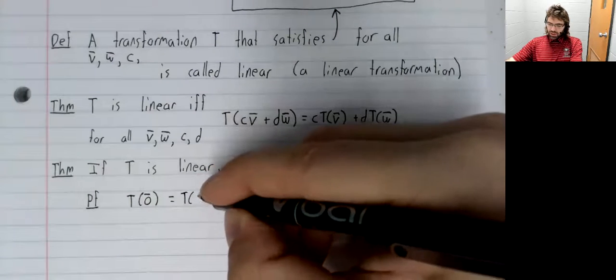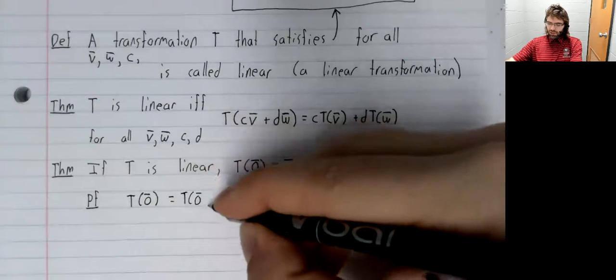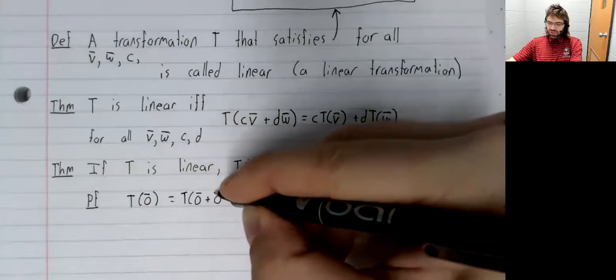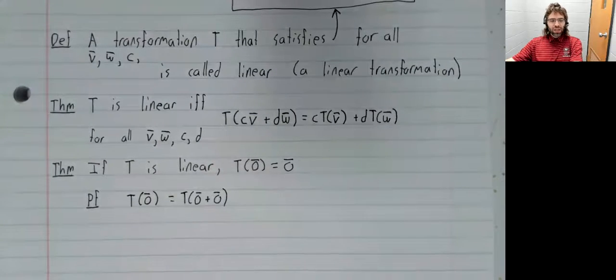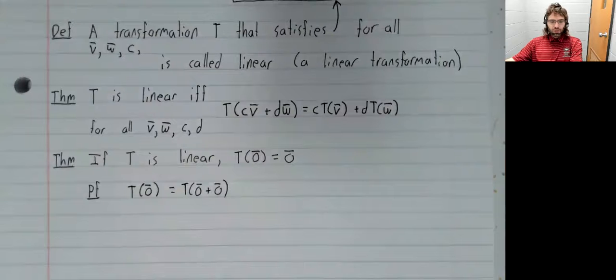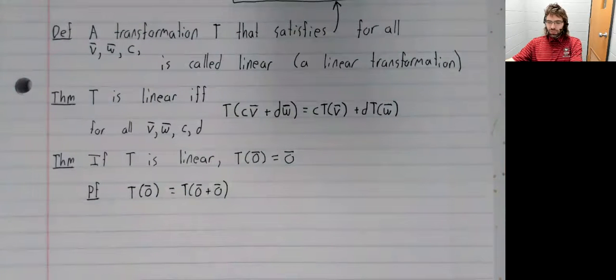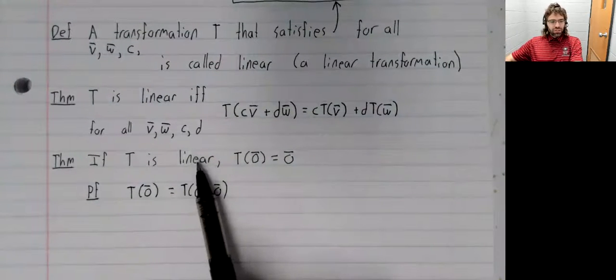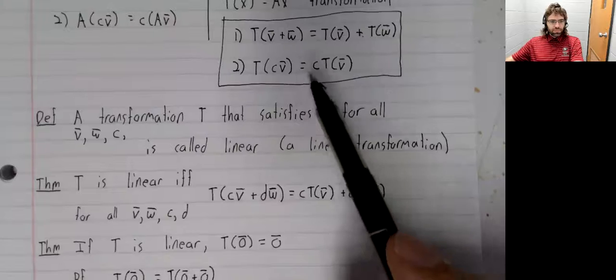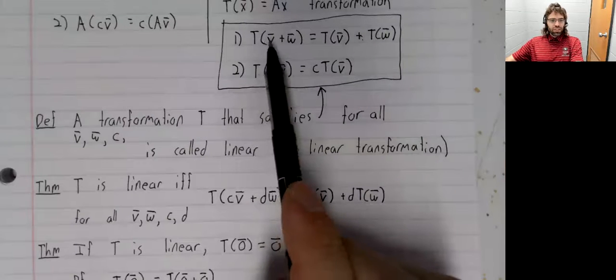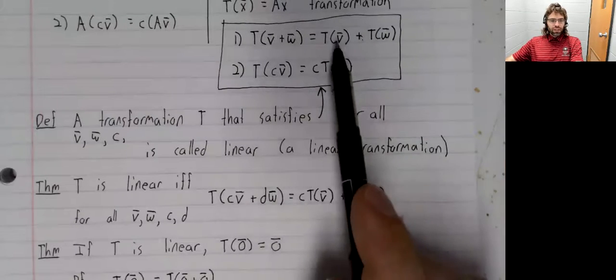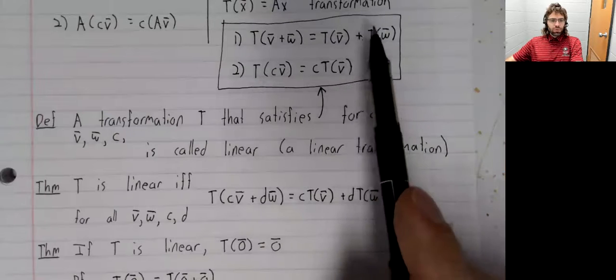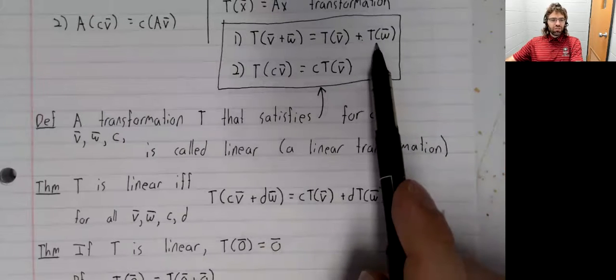T of the zero vector equals T of the zero vector plus the zero vector. Zero plus zero is zero. T is linear, so T(0 + 0) is T(0) plus T(0).